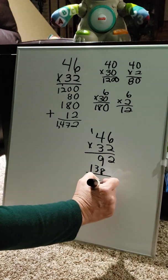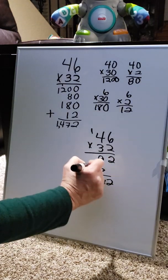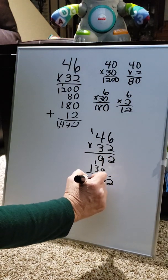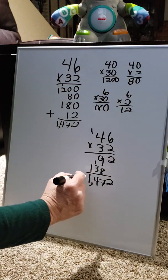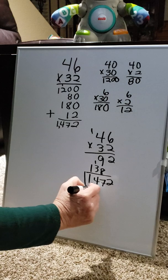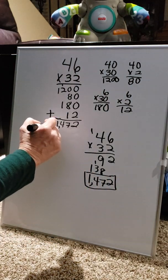We have a 2. 9 plus 8 is 17. Carry the 1. 3 with 1 is 4. And 1. That way, get 1,472. It's the same. The answer is correct.